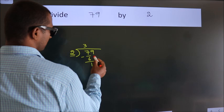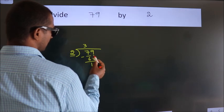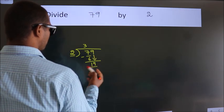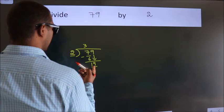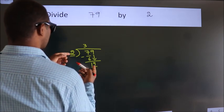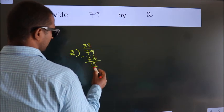After this, bring down the beside number. So 9 down. So 19. A number close to 19 in 2 table is 2 nines, 18.